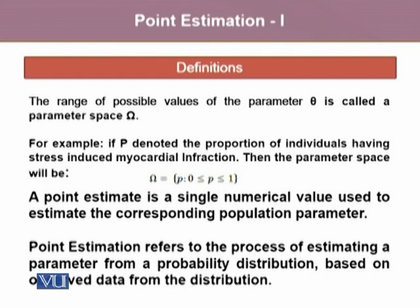Hence, omega takes out all the possible values that p can assume for any specific population — in this case, for individuals having stress-induced myocardial infarction. A point estimate is a single numeric value used to estimate the corresponding population parameter, whereas point estimation refers to the process of estimating a parameter from a probability distribution based on observed data. The point estimate is the result, the outcome, whereas the point estimation is a rule, a formula, a process that helps us get the point estimate.